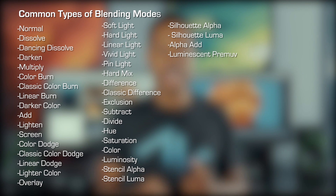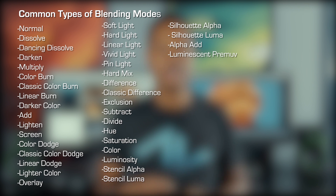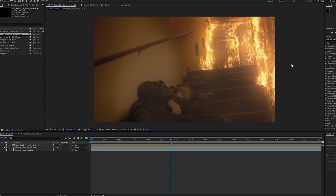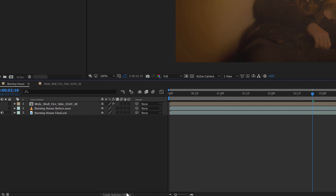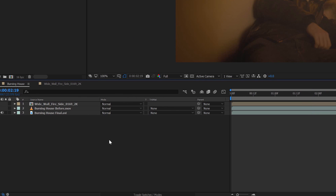The first method, and probably the most common method, is to use blending modes. Depending on your software, these may be called blending modes, blend modes, composite modes, or mixing modes. Whatever they're called in your software, they all do the same thing, which is blend one layer over another.